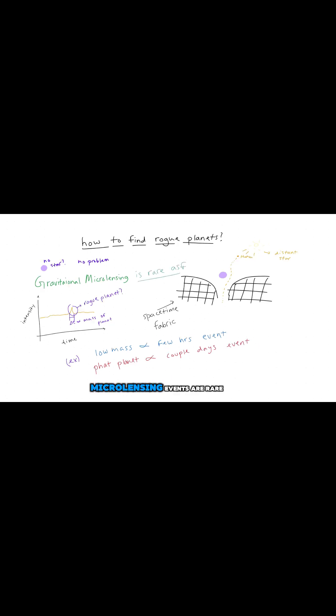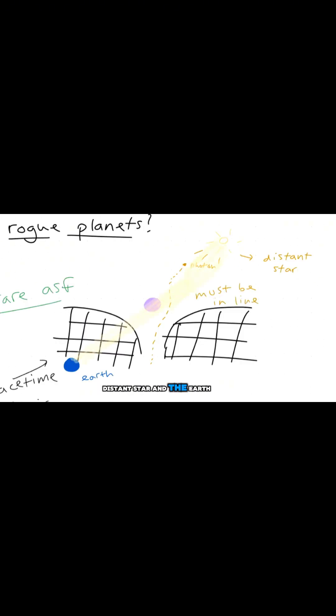Now, this doesn't happen often. Microlensing events are rare, and they require precise alignment between the rogue planet, distant star, and the Earth.